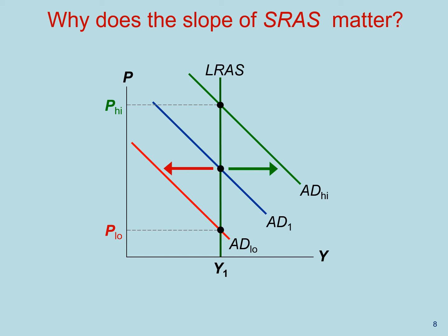On the other hand, if short run aggregate supply is upward sloping, then shifts in aggregate demand do affect output and employment. Without this feature, the model could not serve its main purpose.